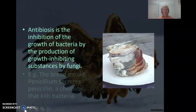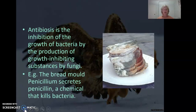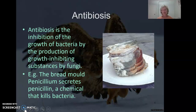Antibiosis is when one species releases a chemical that inhibits the growth of bacteria. In this example it's fungi and they secrete penicillin, which is an antibiotic, hence the name. And obviously that is very negative for the bacterium but it has no effect on the fungus.